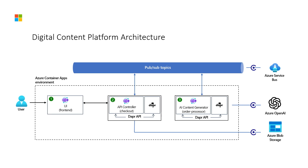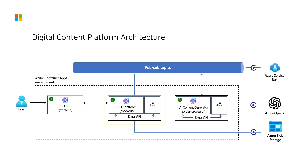If we look at this architecture, we have three different microservice components. We have a UI frontend where customers can interact with the digital content platform, put a prompt in, and receive the image back. Next, we have a middleware API controller, which sends and receives messages through Service Bus PubSub topics, and stores and retrieves images from Azure Blob Storage. Finally, we have an AI content generator, which uses Dolly with OpenAI to generate images and send them to our application.